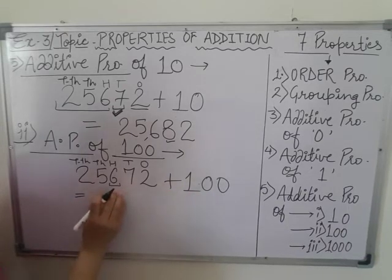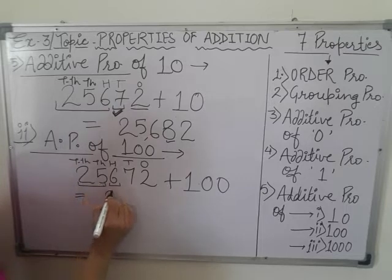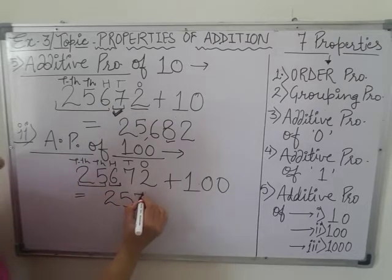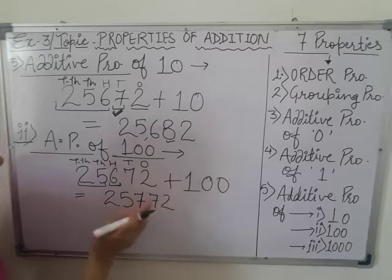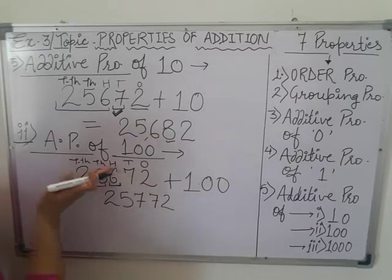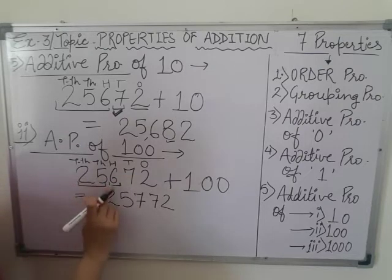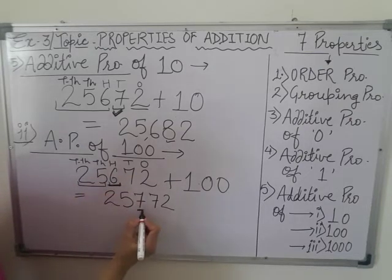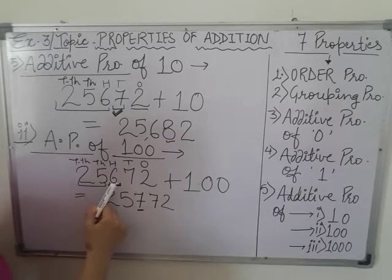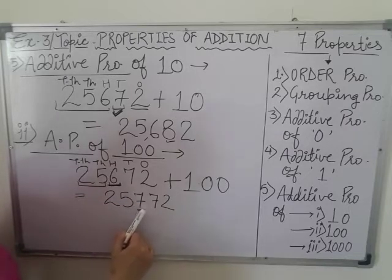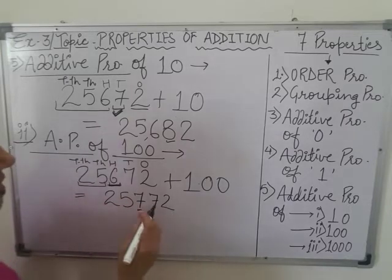We are adding 100 and 6 will increase by 1, so it will convert into 7. 25 will remain similar and this digit will increase by 1, giving us 772. So when we are comparing this number with the previous one, we can see the change only on 100's place digit which is now 7. Previously, our number was 25,672 and now it is 25,772.